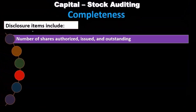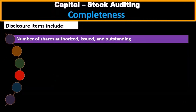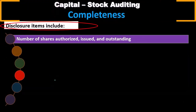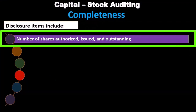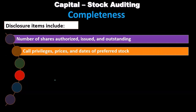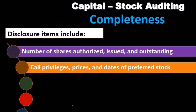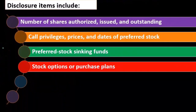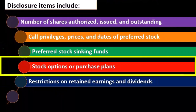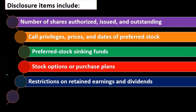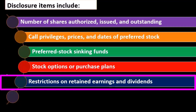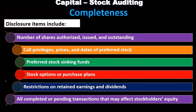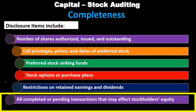For completeness, disclosure items include the number of shares authorized, issued, and outstanding. Also required are call privileges, prices, and dates of preferred stock, preferred stock sinking fund details — applicable only if preferred stock exists — along with any stock options or purchase plans. Additionally, any restrictions on retained earnings and dividends must be disclosed, as well as all completed or pending transactions that may affect stockholders' equity.